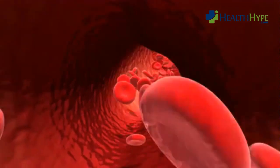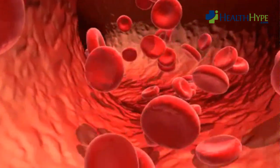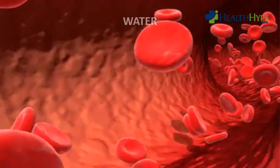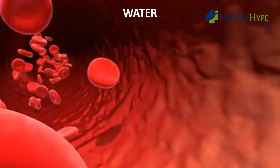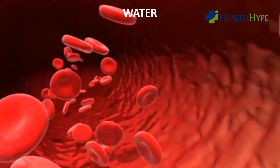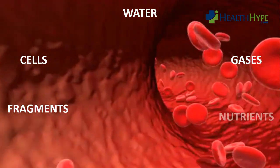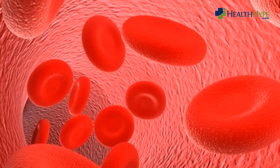Blood is constantly flowing in the arteries, veins, and capillaries throughout the body. Although blood is mostly composed of water, it has a host of other substances within it. This includes blood cells, fragments of cells, gases, nutrients, and various chemicals such as hormones. Despite these various substances, blood is normally fluid so that it can flow with ease.